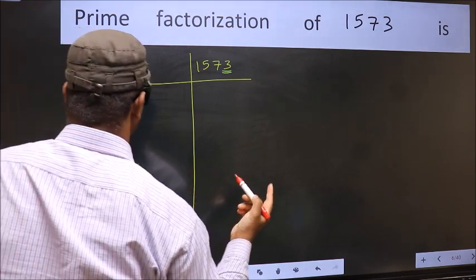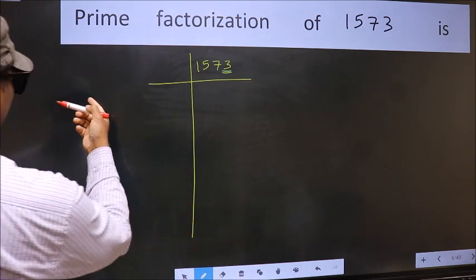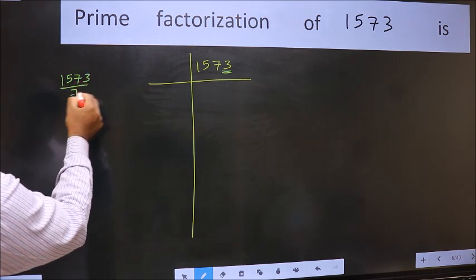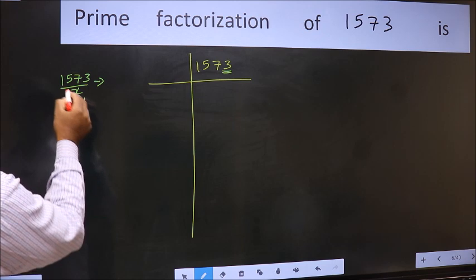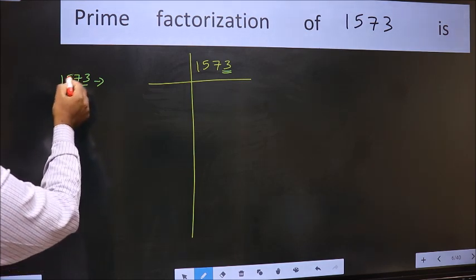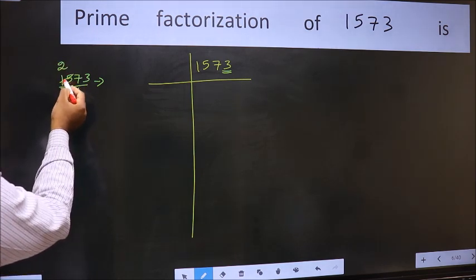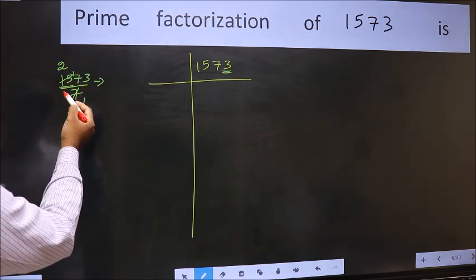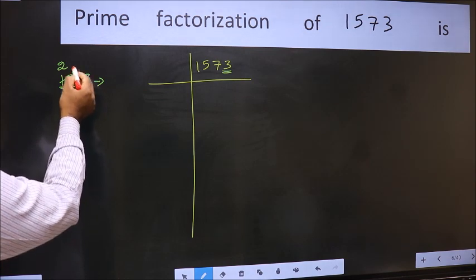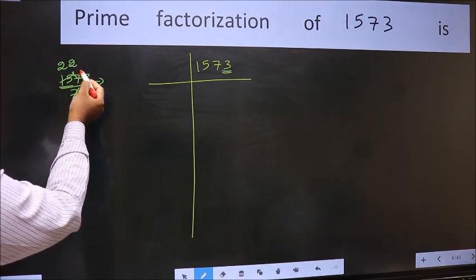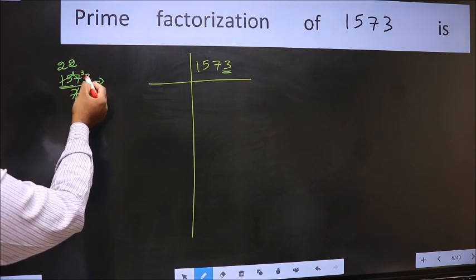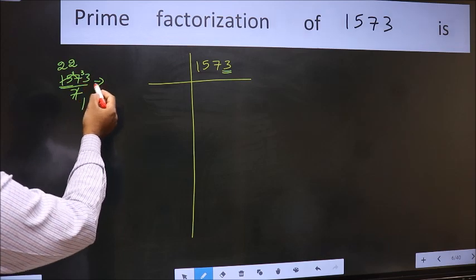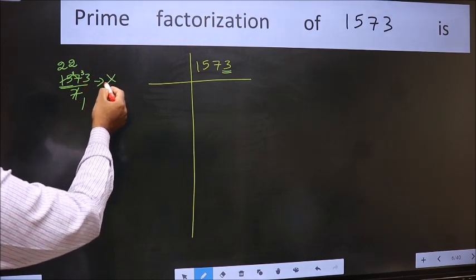Next prime number 7. Let us check divisibility by 7. 1573 divided by 7: a number close to 15 in the 7 table is 7 twos, 14. 15 minus 14 is 1; carry forward to get 17. A number close to 17 in the 7 table is 14. 17 minus 14 is 3; carry forward to get 33. We don't get 33 in the 7 table, so a number is left out. This is not divisible by 7.